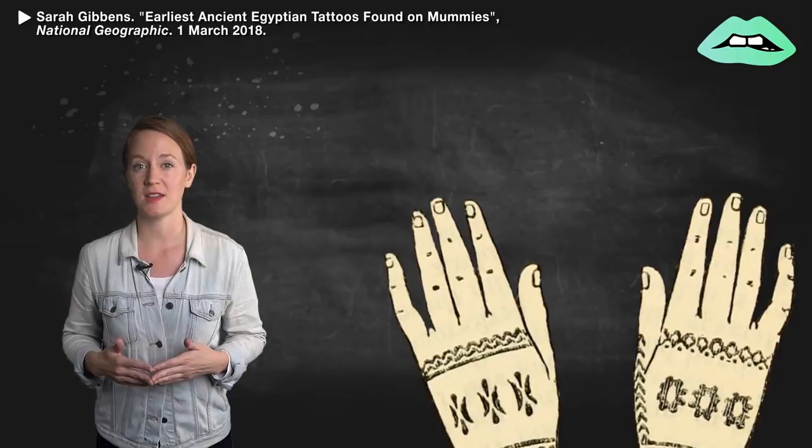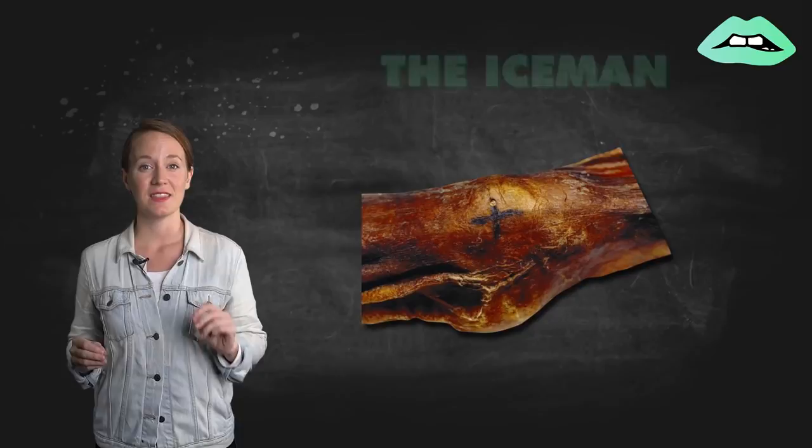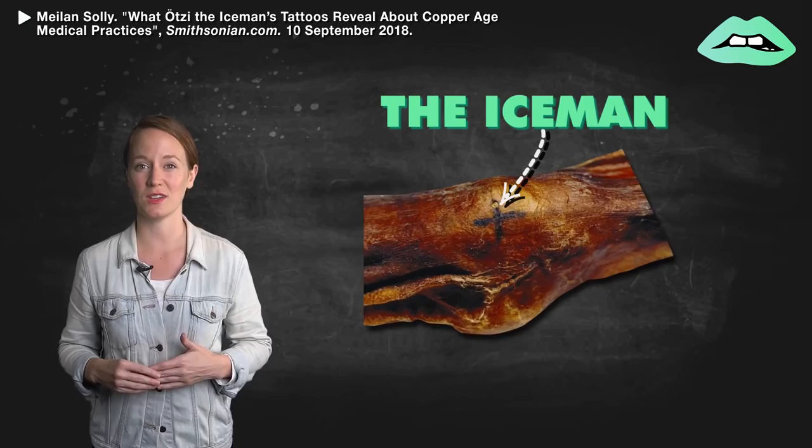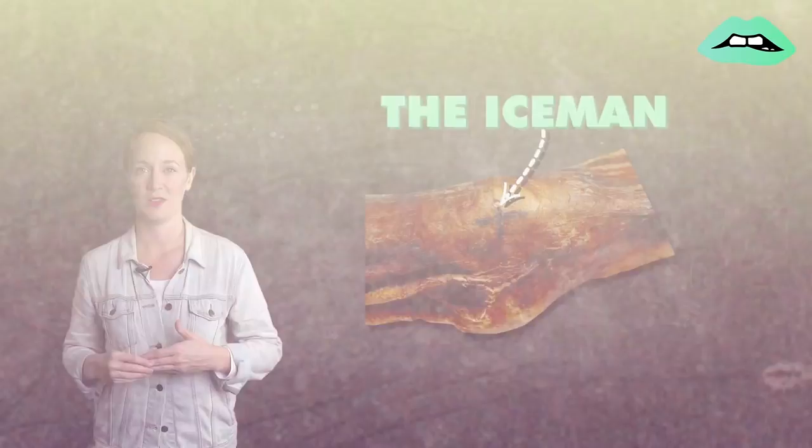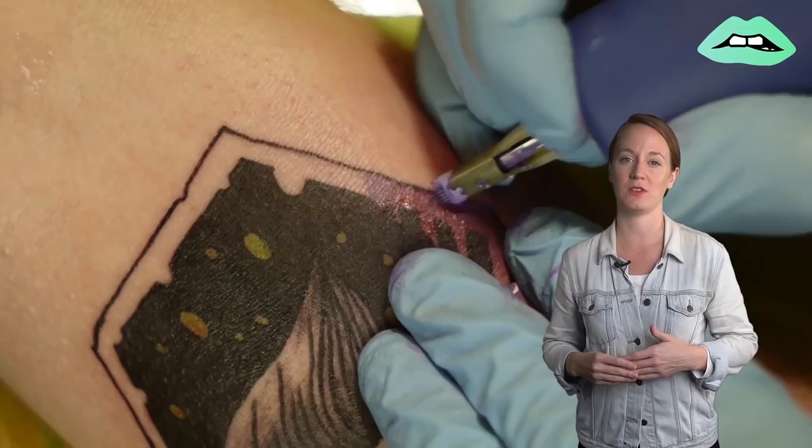Many female Egyptian mummies dating back to 2000 BCE have been found with tattoos. And the Iceman, a mummy discovered in 1991 that's believed to have lived between 3345 BCE and 3300 BCE, had 61 tattoos in total. Today people most likely ink themselves for self-expression or sentimental reasons.